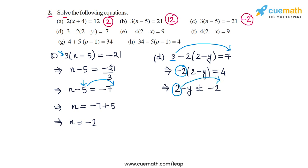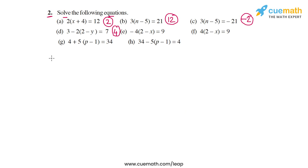Now transpose 2 to the right side, making it minus 2, leaving minus y on the left and minus 2 minus 2, which is minus 4, on the right. We have minus y = minus 4, and multiplying both sides by minus 1 gives y is equal to 4. The solution for part d is y = 4.